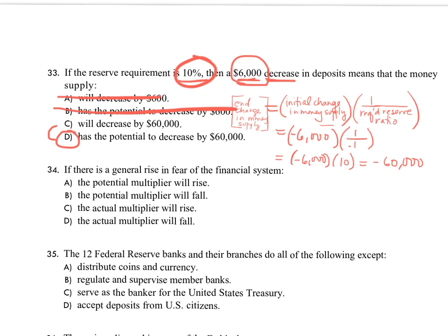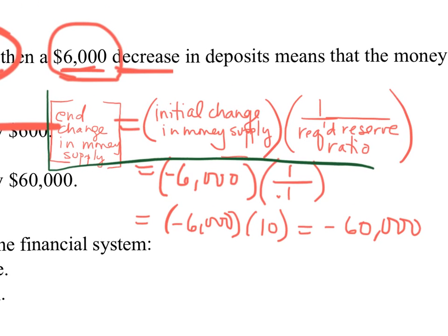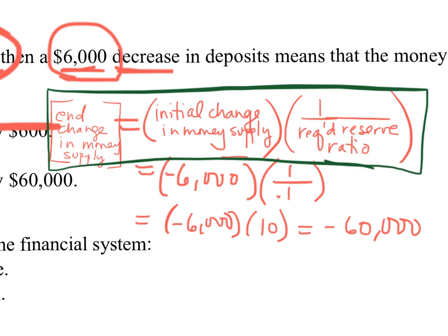So your unified equation is right here, and you can use it to solve any problem. For instance, if the Federal Reserve wants to decrease the money supply by $60,000, and you know the reserve ratio is 10%, you can solve for the initial deposit change needed: they would need to reduce deposits by $6,000. That is exactly what monetary policy is — the Fed making initial money changes and affecting the interest rate and then aggregate demand.